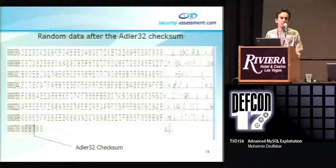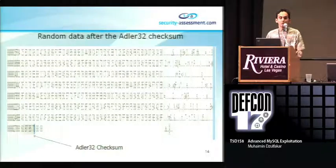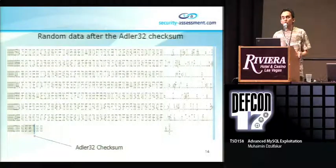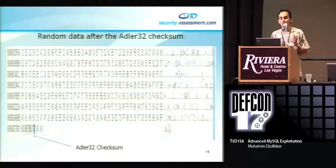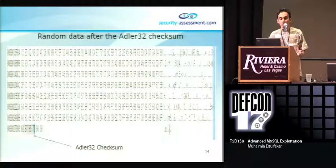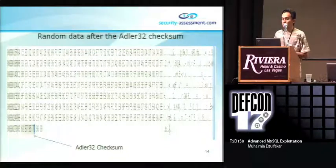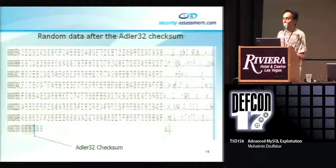Here is an example. Let's say we require three columns. The arbitrary data is injected only in the first column, and then we have two null bytes injected into the second column onward.